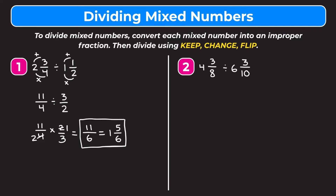Example two is four and three-eighths divided by six and three-tenths. We start by changing each mixed number into an improper fraction. For four and three-eighths: eight times four is thirty-two, plus three is thirty-five — that's our new numerator over eight, giving us thirty-five eighths. For six and three-tenths: ten times six is sixty, plus three is sixty-three, over ten. So we have thirty-five eighths divided by sixty-three tenths.